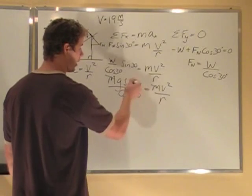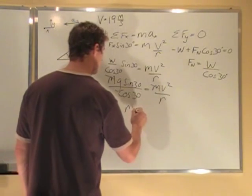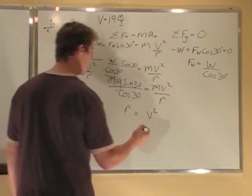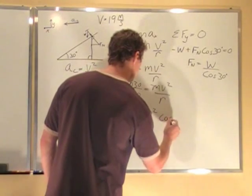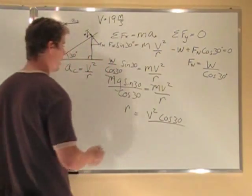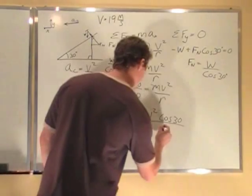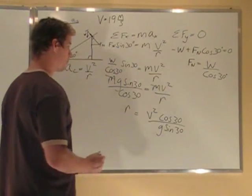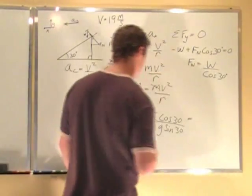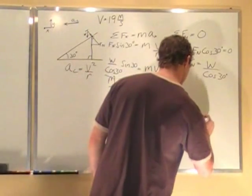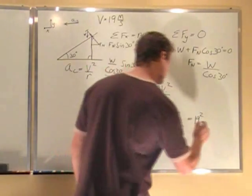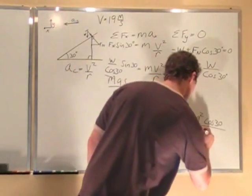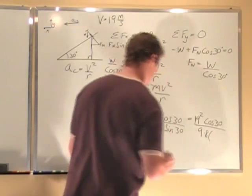I'm looking for r, so I'm going to multiply r to this side and v squared here. So I have to multiply cos 30 up here and divide g sine 30 down here. Now I know all these numbers, so I'll plug them in. v is 19, so I get 19 squared times cos 30, all over g, which is 9.8, and sine 30.